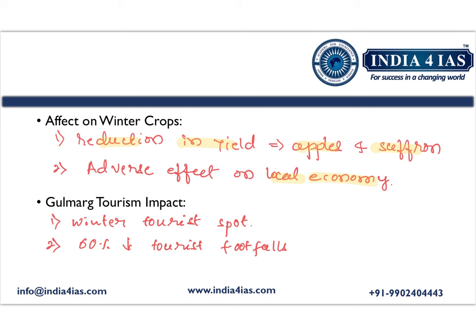Dry winter also has a negative impact on tourism. Gulmarg is one of the major winter tourist hotspots in Jammu and Kashmir, but due to reduced snowfall and no precipitation, there has been a 60% decrease in tourist footfalls this year. This covers the causes of dry winter and its impact on economy and ecology in the region.